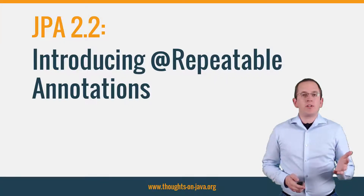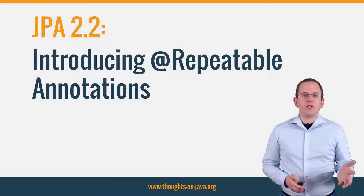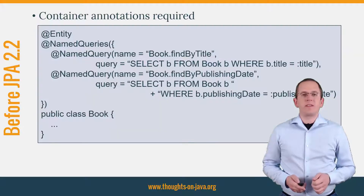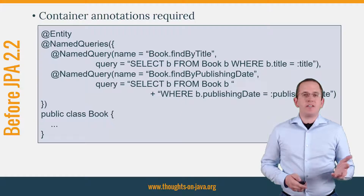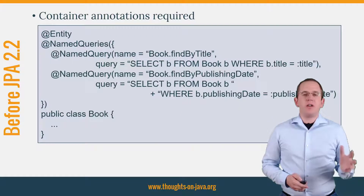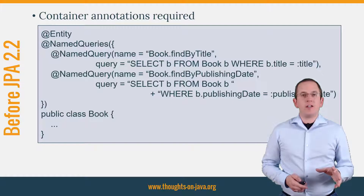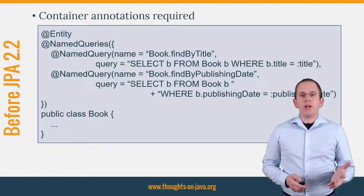One of them is that some of JPA's annotations are now repeatable. Up to Java 8, annotations had a major usability flaw: you were not allowed to annotate a class, method, or attribute with multiple instances of the same annotation.